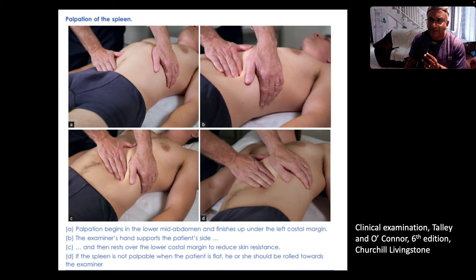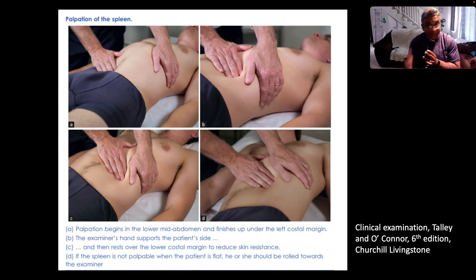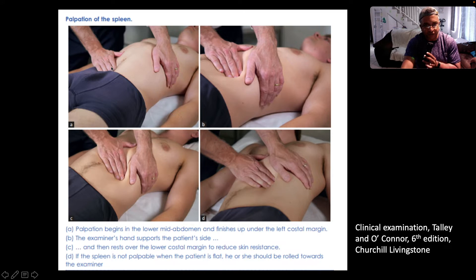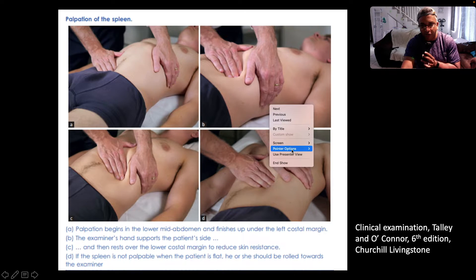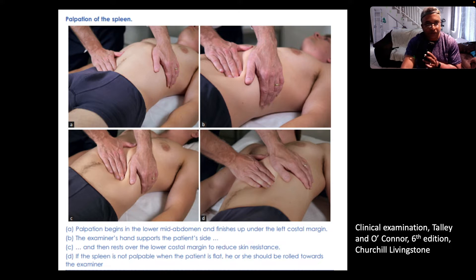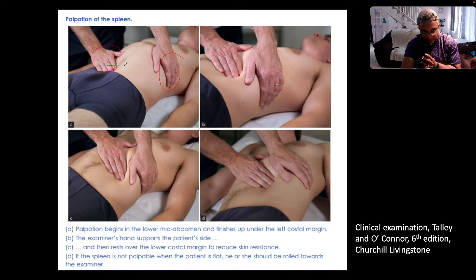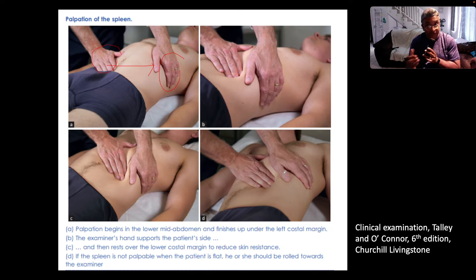In terms of the spleen, remember that in children the spleen enlarges inferiorly, but in adults it enlarges inferomedially. So you start off from the right iliac fossa and feel progressively superomedially — coming in, coming in — until you're at the left costal margin, or until you can feel the spleen.